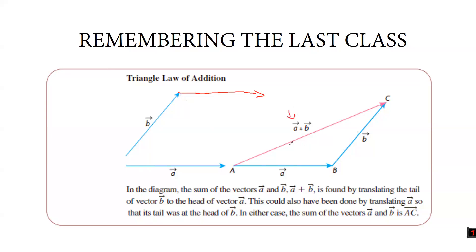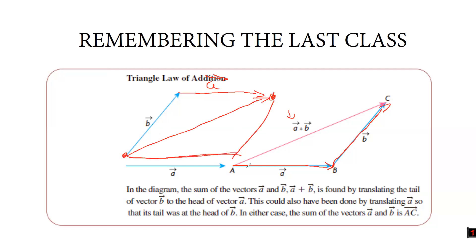Vector b is transferred without its direction changing to the head of vector a, and this finishes the addition. But b plus a results in exactly the same product. Furthermore, you can see that it forms a parallelogram altogether, because this vector equals vector b — it's just translated to another point in space with the same magnitude and direction.